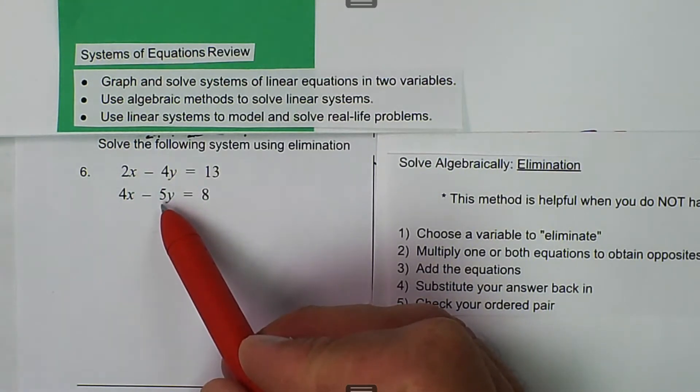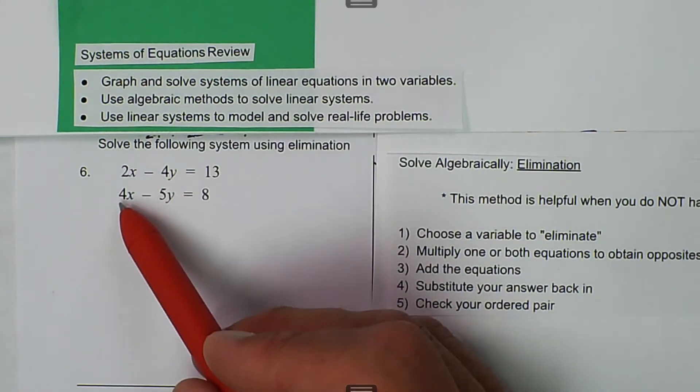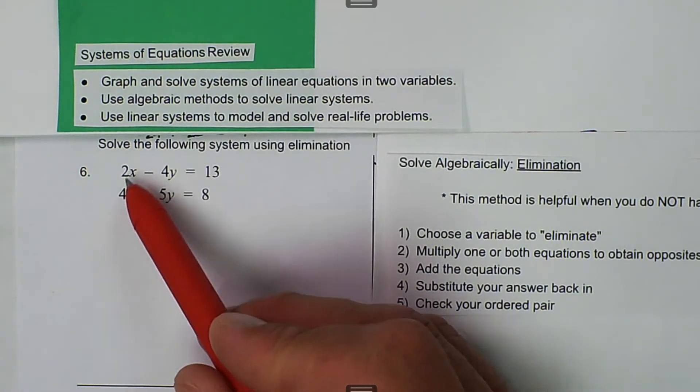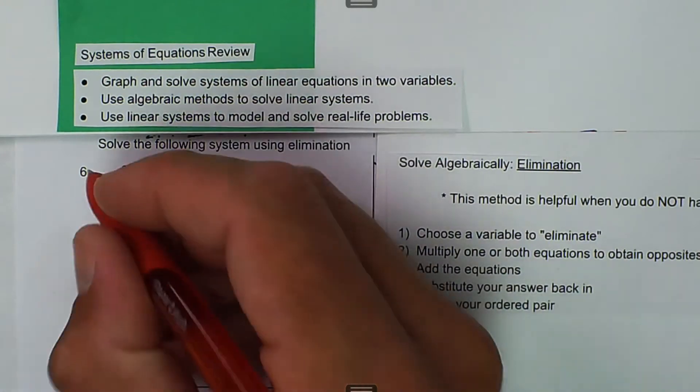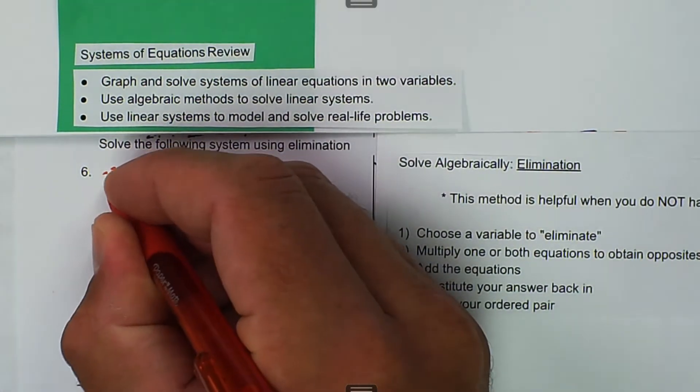So the one that's going to be easiest to work with is if I make this top x become the opposite of what we have here. So this is 4, and I want 2x to become negative 4. So how do you make 2x become negative 4? You multiply by negative 2.